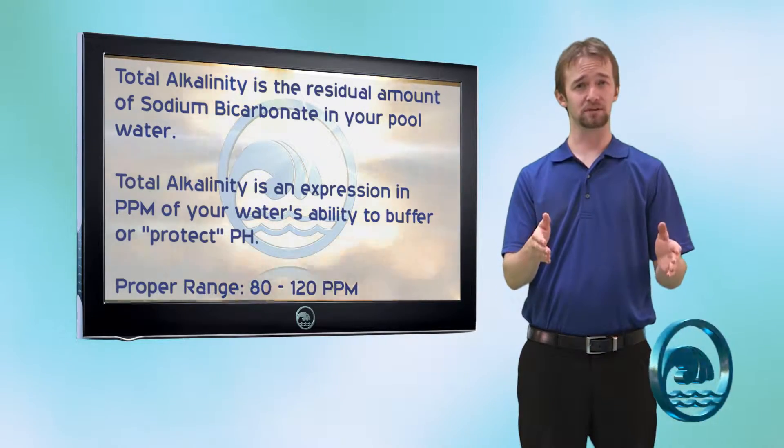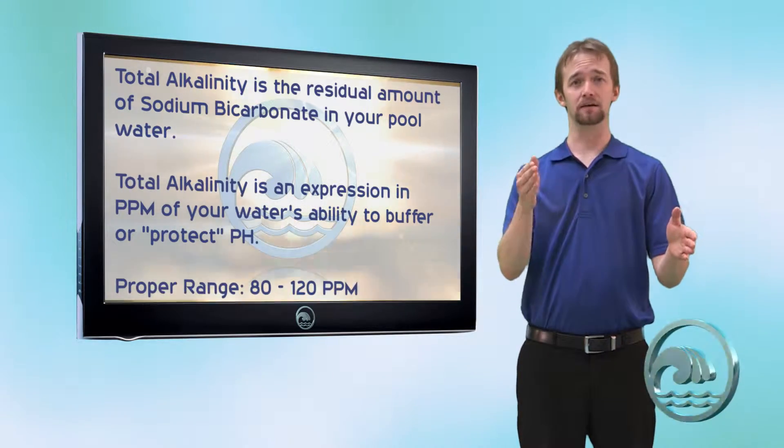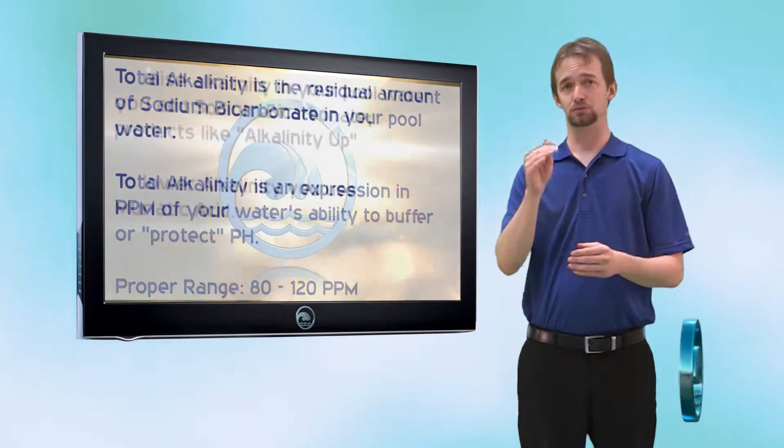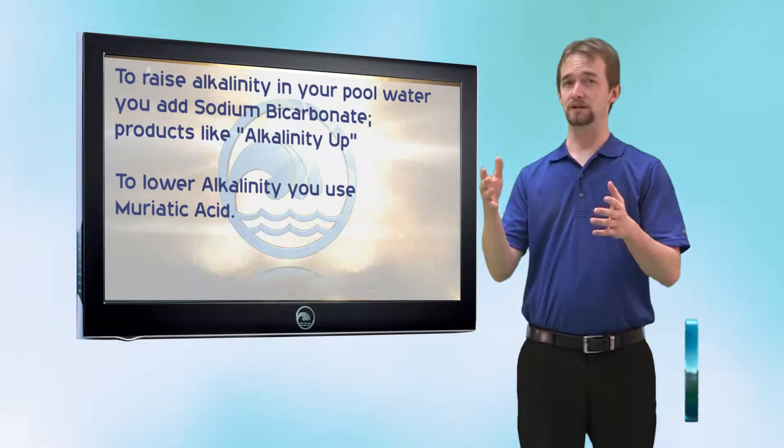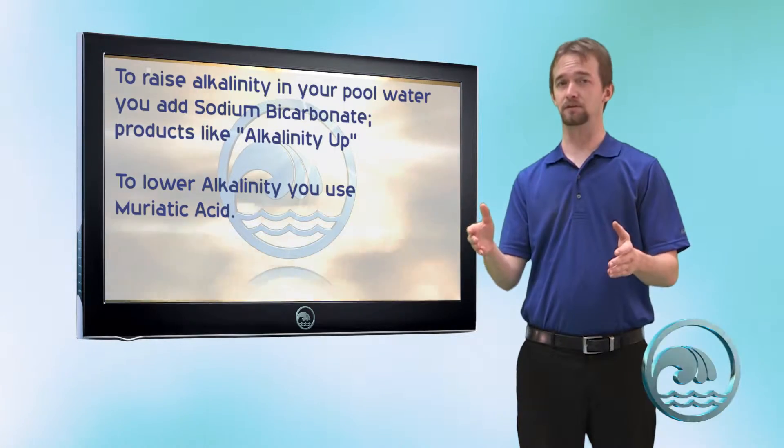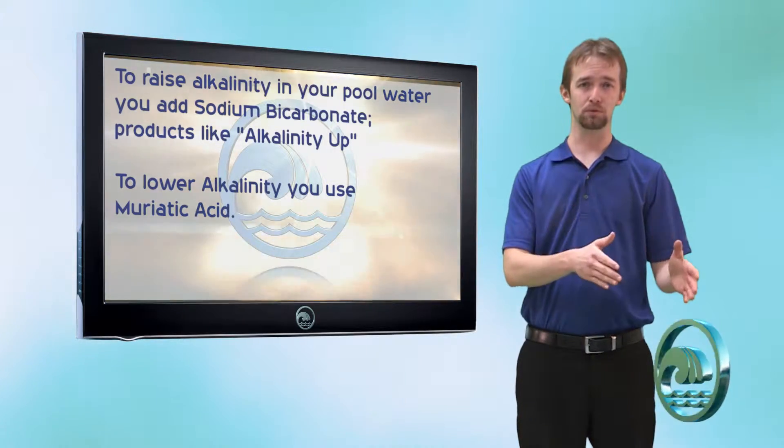The proper range for total alkalinity is between 80 and 120 PPM. To raise alkalinity in your pool water, you need to add sodium bicarbonate. If you get too much alkalinity in your water, you need to use muriatic acid to lower it.